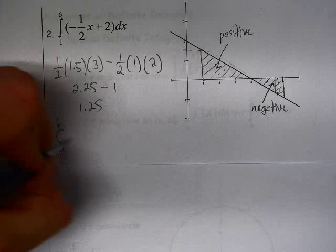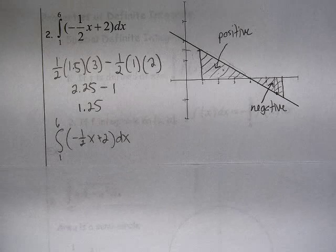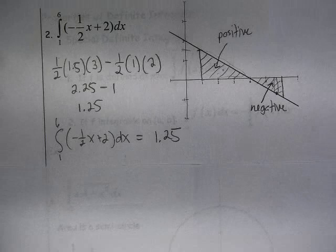All right, so what that means is this definite integral from 1 to 6, negative 1 half x plus 2 dx, that definite integral equals 1.25 square units.